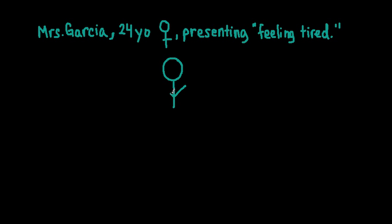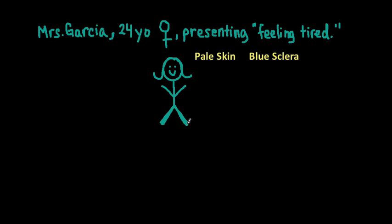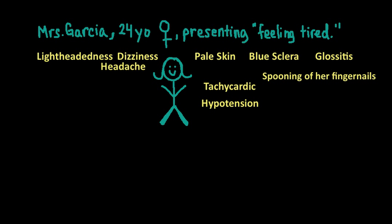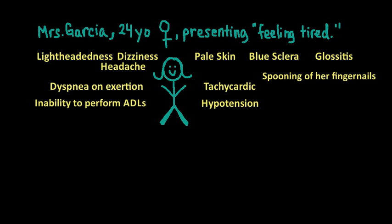Going from head to toe: general signs may include pale skin. If the anemia is very severe, we may see blue sclera, when the white of the eyes has a blue tinge due to lack of red blood cells and the rich red pigment provided by iron and hemoglobin. Spooning of the fingernails — flat and brittle nails. Some patients present with a sore tongue, called glossitis. Symptoms due to lack of oxygen to the brain include dizziness, headache, and lightheadedness. Cardiovascular symptoms may be increased heart rate or low blood pressure — hypotension. She may be short of breath, particularly on exertion, with changes in her ability to perform activities of daily life.